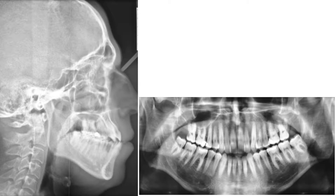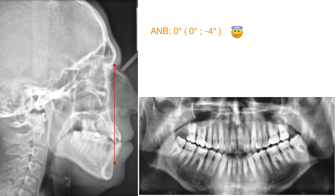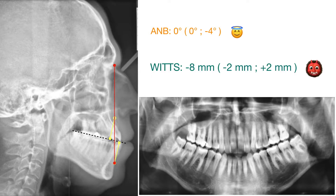The cephalometric study shows an ANB angle value of zero, which is normal or borderline. But the ANB angular value doesn't always tell us the truth about intermaxillary relations — different inclinations of the mandibular plane can increase or decrease its value. A more reliable diagnostic index is the WITS index, which correlates ANB positions with the mandibular plane itself. In this case, the WITS measures minus 8 mm, unveiling a full skeletal class three.